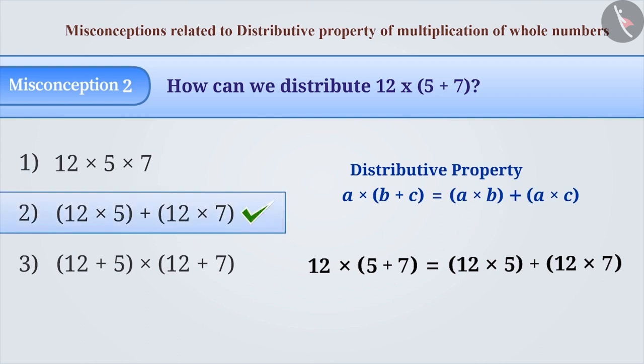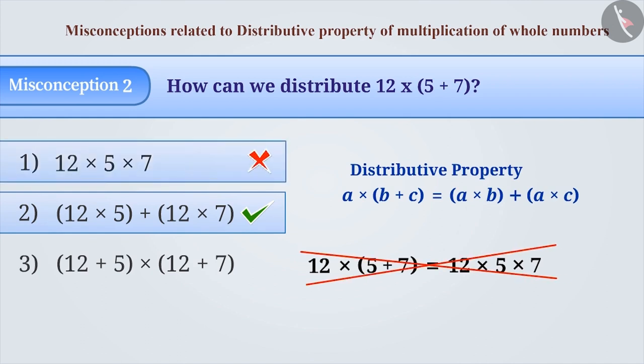Due to confusion in understanding the distributive property, sometimes the number outside the brackets is simply multiplied with the numbers inside the bracket. This is an incorrect way.